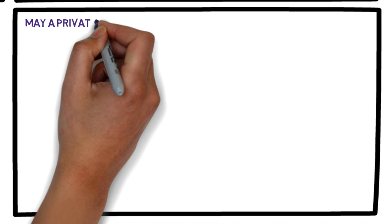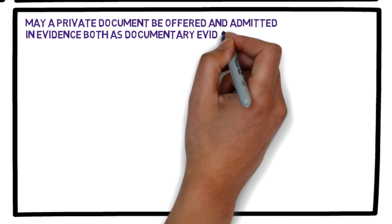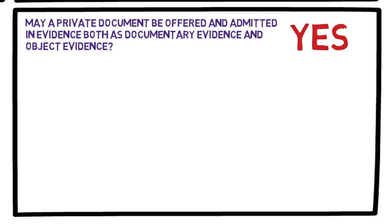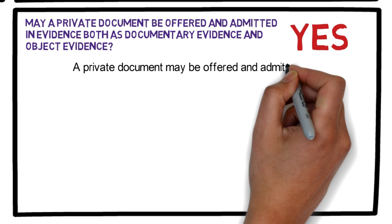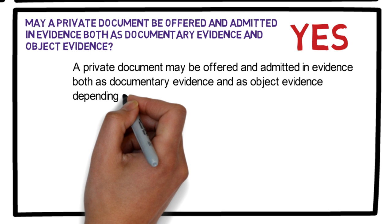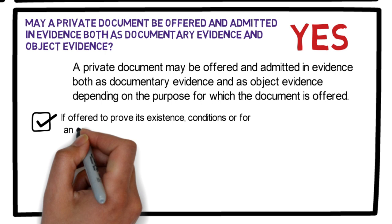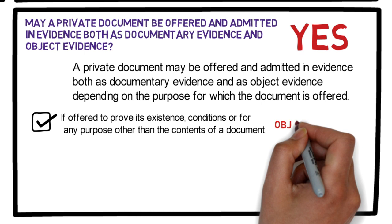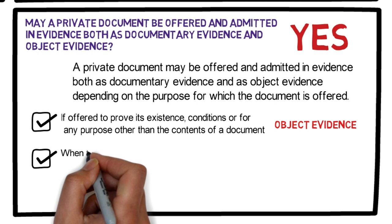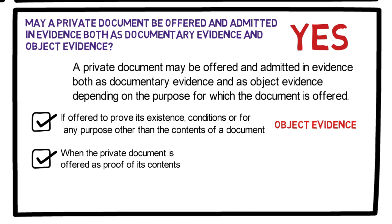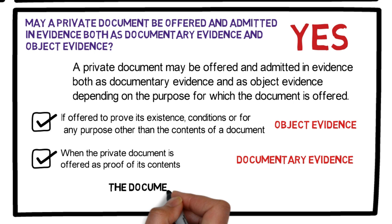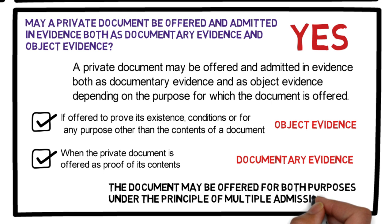May a private document be offered and admitted in evidence both as documentary evidence and object evidence? The answer is yes. A private document may be offered and admitted in evidence both as documentary evidence and as object evidence depending on the purpose for which the document is offered. If offered to prove its existence, conditions, or for any purpose other than the contents of a document, it is considered object evidence. When offered as proof of its contents, it is considered documentary evidence. The document may be offered for both purposes under the principle of multiple admissibility.